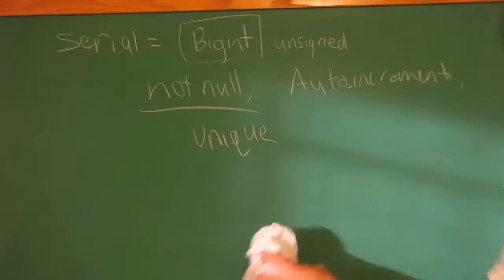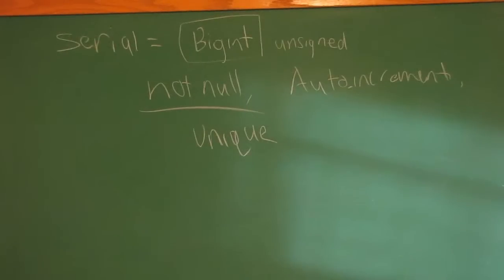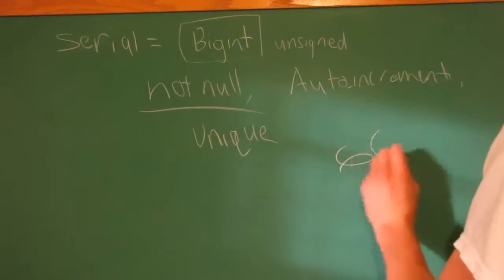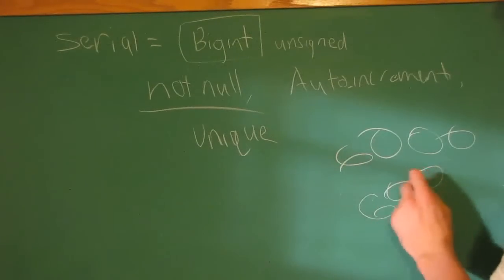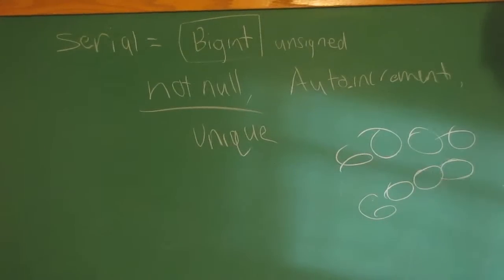Now what unique means, that just means that there can't be any other entries with the same number. So 6,000. If there's another one with 6,000, it's just not going to work because it's not unique. It won't let that happen. So this is going to have to be 6,001 or something other than 6,000.